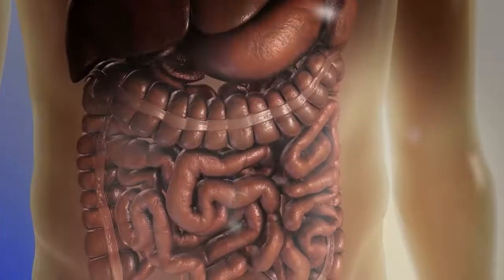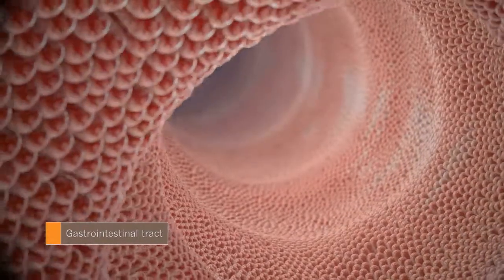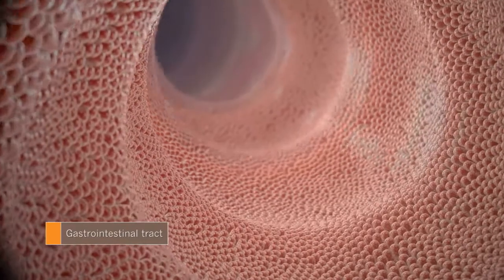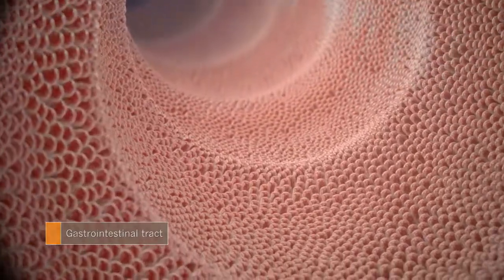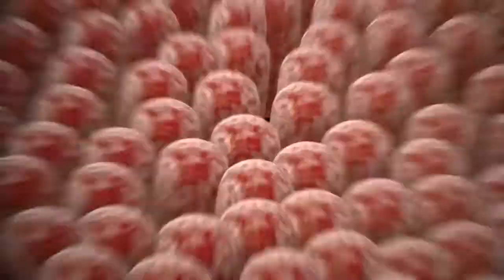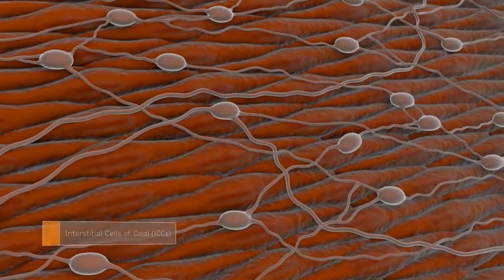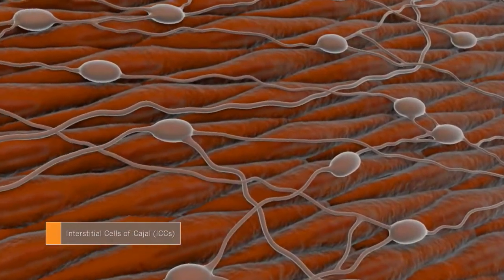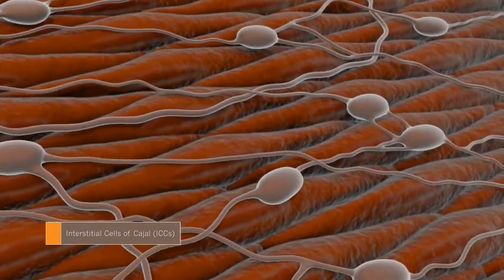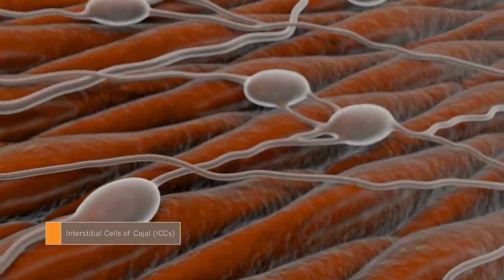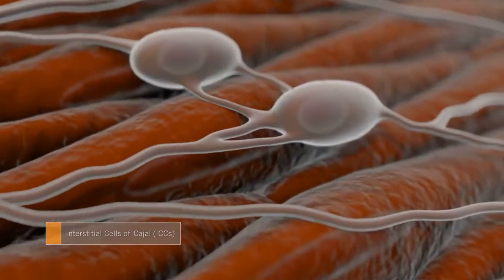Within the wall of the gastrointestinal tract, peristalsis is achieved through communication between nerves and smooth muscle cells. This communication is coordinated by a complex network of innervated cells known as interstitial cells of Cajal, or ICCs, that surround and intercalate between these smooth muscle cells and peripheral nervous system elements.